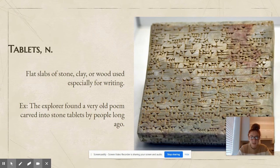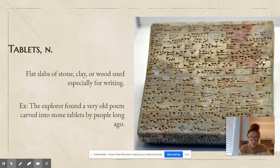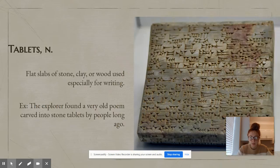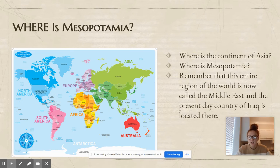Tablets is also a noun. Tablets are flat slabs of stone, clay, or wood used especially for writing. The explorer found a very old poem carved into stone tablets by people long ago. So they wrote on clay, stone, or wood blocks — not paper.